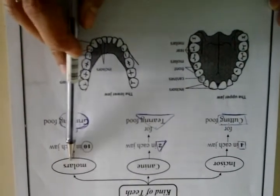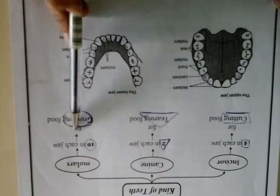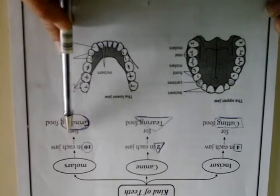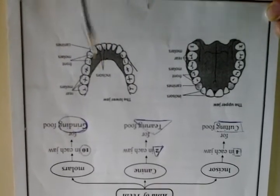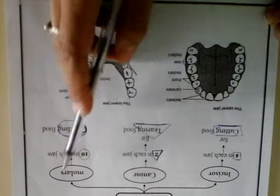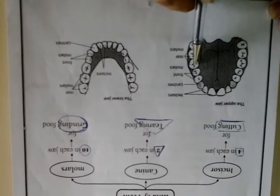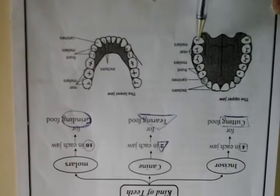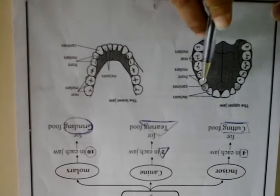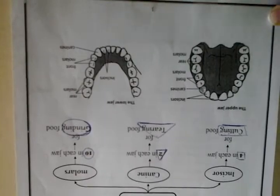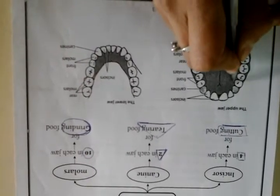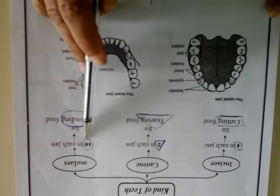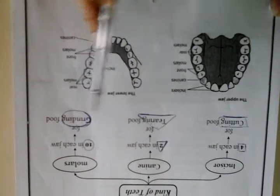And molars — ten in each jaw, for grinding. Let's count on the diagram: one, two, three, four, five on this side, and one, two, three, four, five on the opposite side. Five and five equals ten. Ten in each jaw, for grinding.